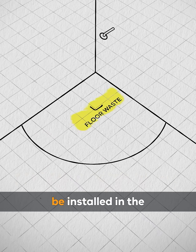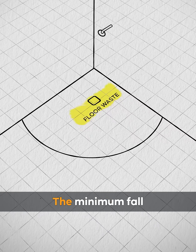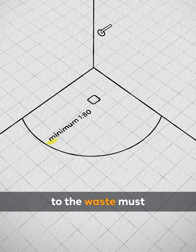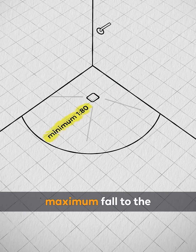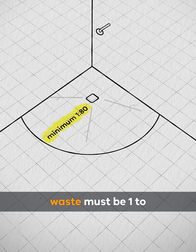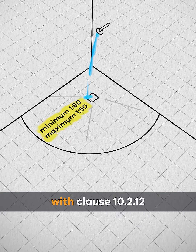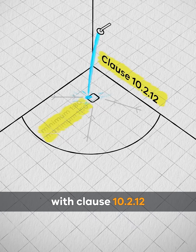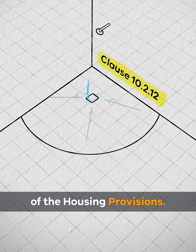A floor waste must be installed in the shower area. The minimum fall to the waste must be 1 to 80 and the maximum fall to the waste must be 1 to 50, in accordance with Clause 10.2.12 of the housing provisions.